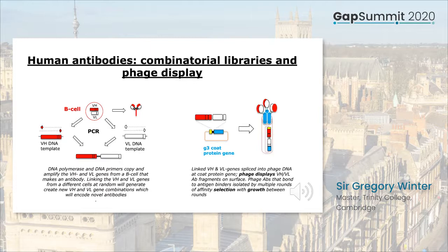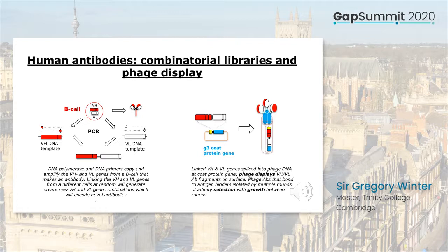The methods as finally developed: we took human lymphocytes and used the polymerase chain reaction to amplify the heavy and light chain genes from those lymphocytes. We then shuffled the heavy and light chain genes from different lymphocytes to create a highly diverse library of antibody genes. That library was screened by inserting it into filamentous bacteriophage, cloning the antibody genes adjacent to the N-terminal portion of the gene encoding the coat protein — as George Smith had done for peptides.